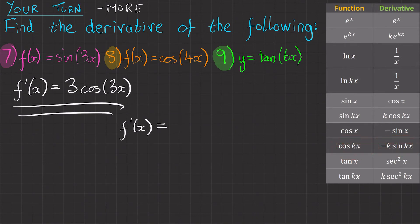And the derivative of this is minus k sin kx. Bit trickier. But here we go. So we've got minus and then 4 sin 4x. And that's that done.